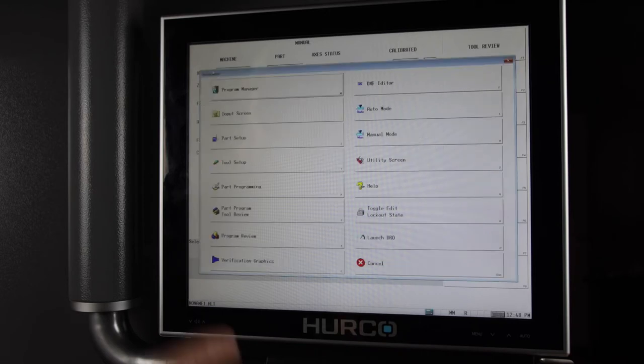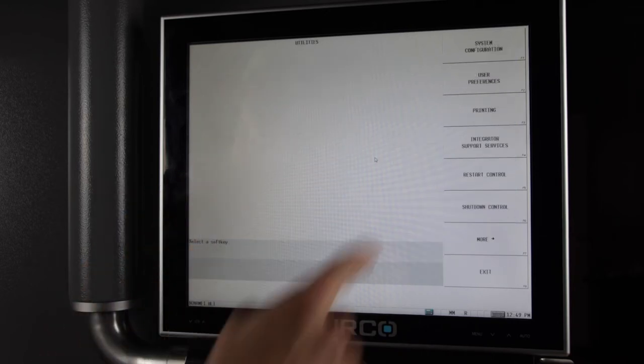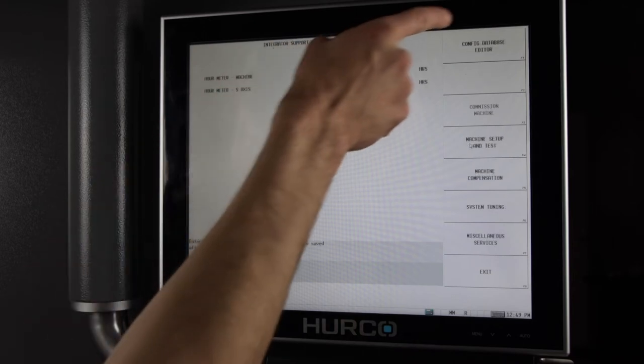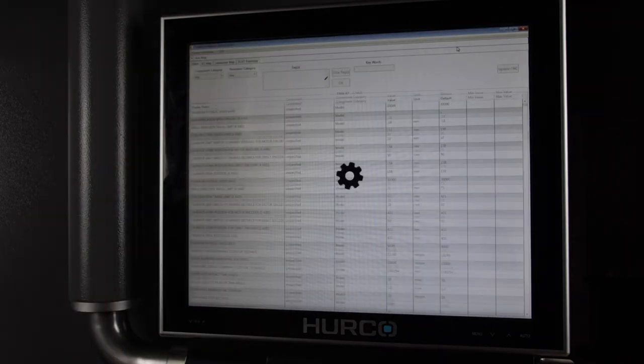Select the auxiliary menu key on the console. Then select utility screen. Integrator support services. The password is 46268. Then select config database editor.